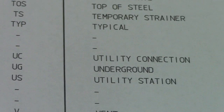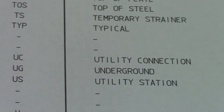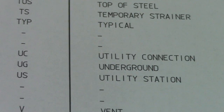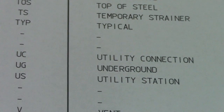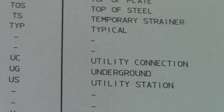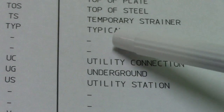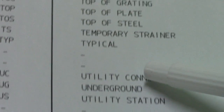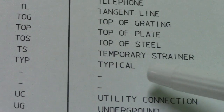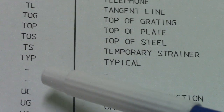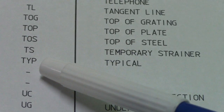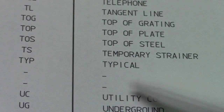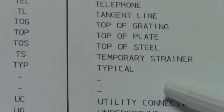UC is utility connection, UG is underground. TYP is typical — this is also a number one question asked by interviewers.